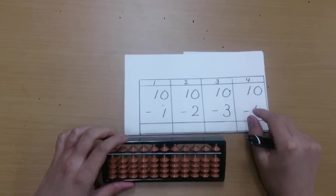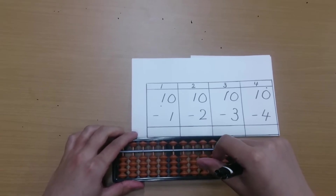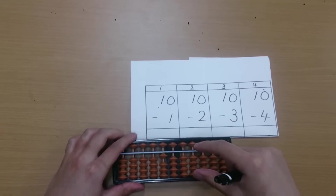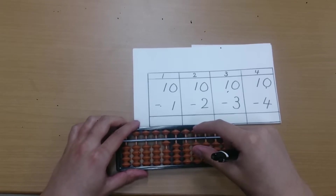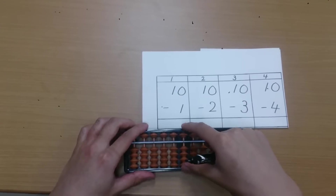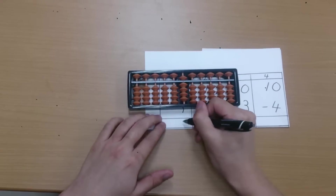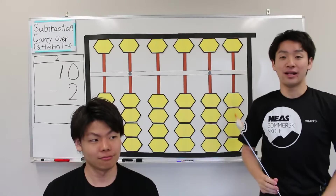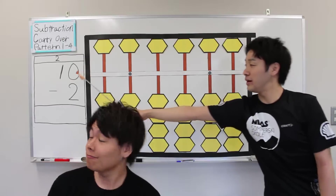Question number 1. Plus 10. Subtract 1. 2, subtract 1, subtract 10, and add 9. The answer is 9. Let's move on to question number 2.